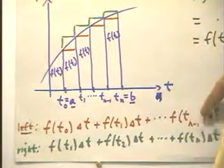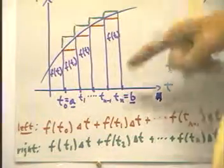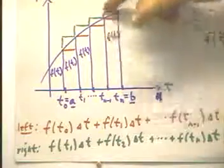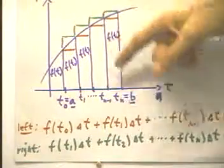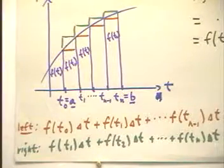And that just continues until we get to the last interval. Now, on the last interval, we're going to use the left hand altitude, which is f of tn minus 1. We're not going to use f of tn. We're going to go up to f of tn minus 1 and multiply that by delta t.